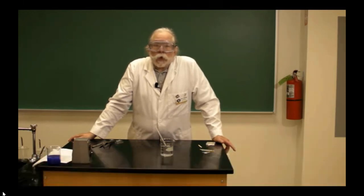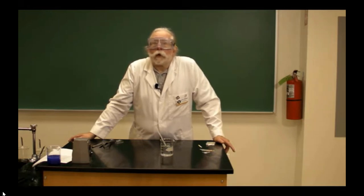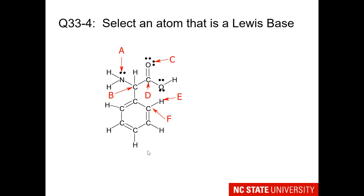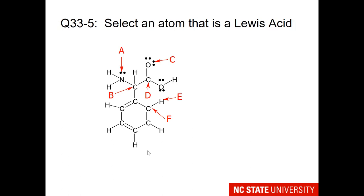What does this mean about rain which passes through air that contains carbon dioxide? Here is a practice question: select an atom that is a Lewis base — you're looking for lone pairs on an atom that is willing to share. There are two possible answers. Next question: select an atom that is a Lewis acid — looking for an atom with less than four electron regions that is partially positive. Again, there are two answers, although one is a much stronger Lewis acid than the other.